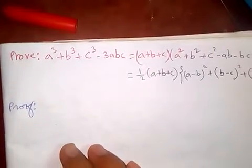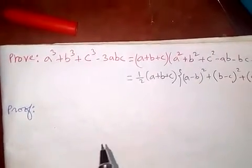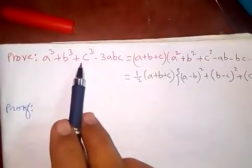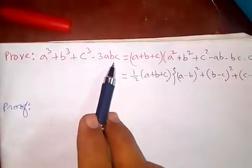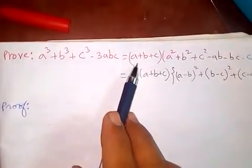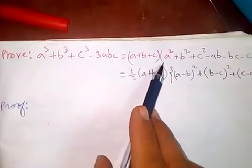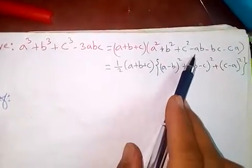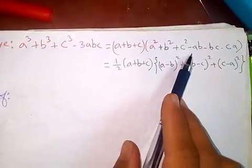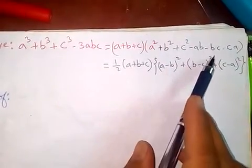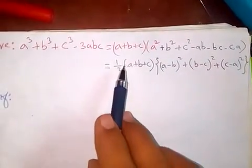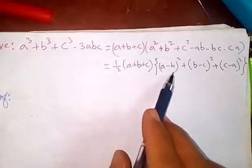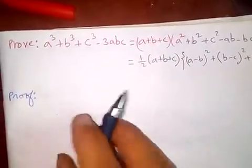Today let's prove this identity: a³ + b³ + c³ - 3abc equals (a + b + c)(a² + b² + c² - ab - bc - ca), which is again half of (a + b + c) times that expression.